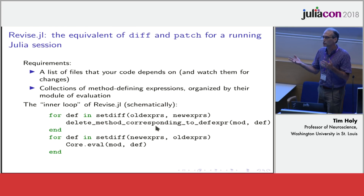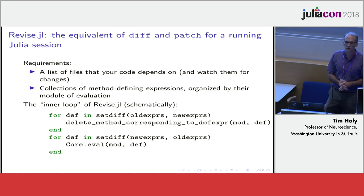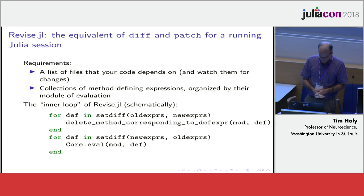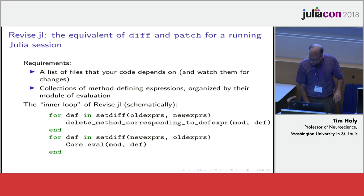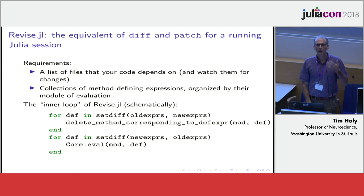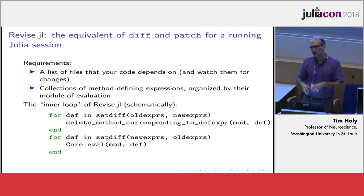Of course, first you have to be able to delete methods — you couldn't do that in older versions of Julia. Jameson spent a pleasant Sunday afternoon with me in a Boston cafe, and we managed to get that into Julia 0.7. Then you have to figure out exactly which method corresponds to a particular expression, and that's where a lot of the deeper stuff in Revise comes into play.